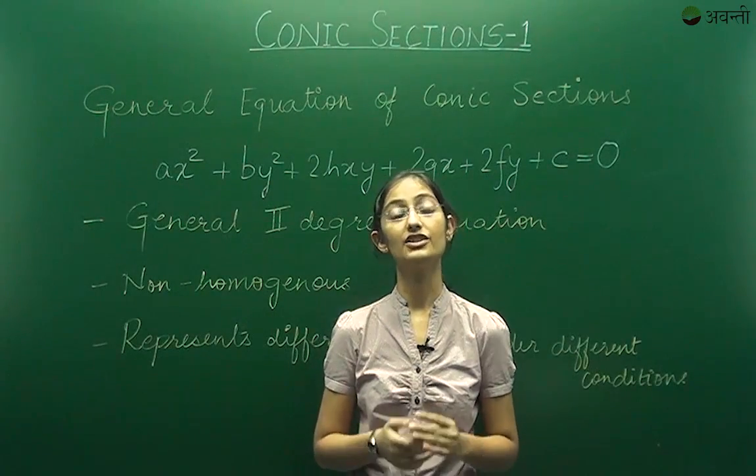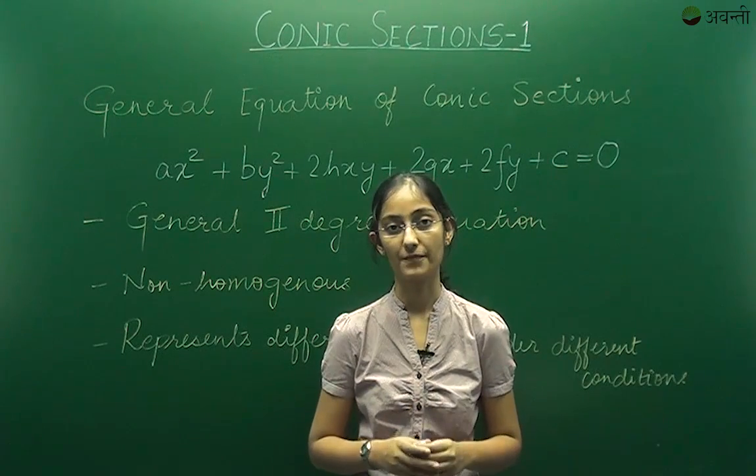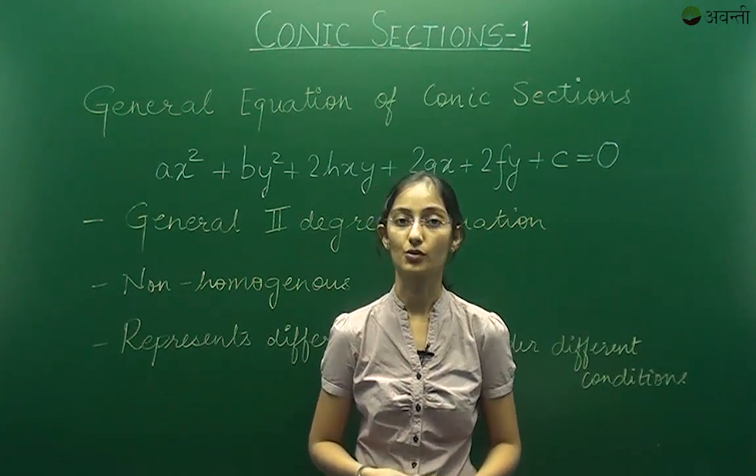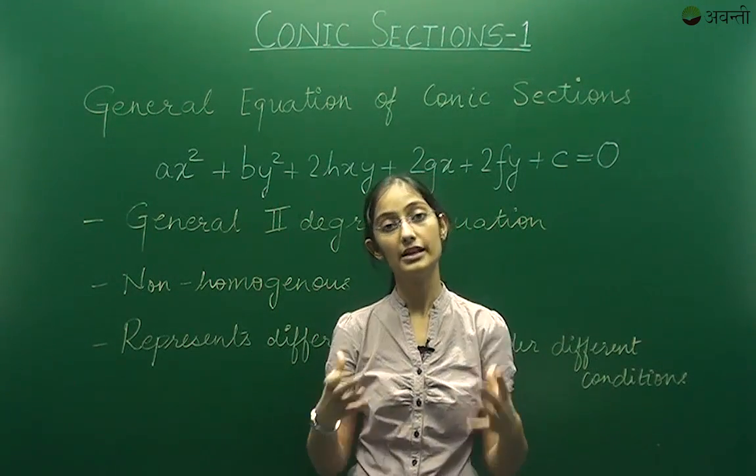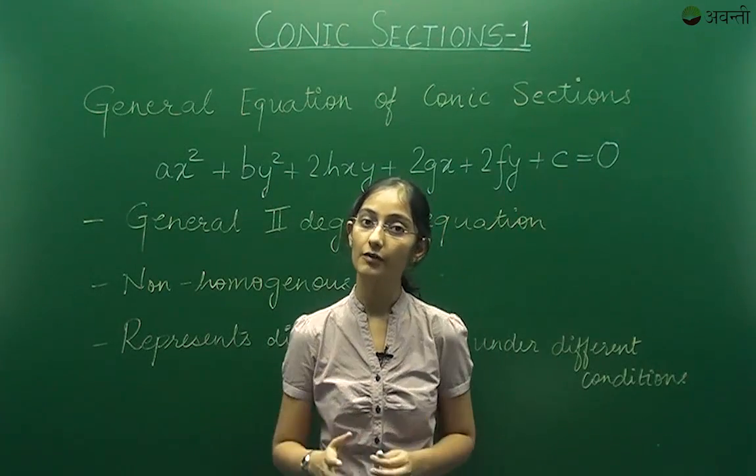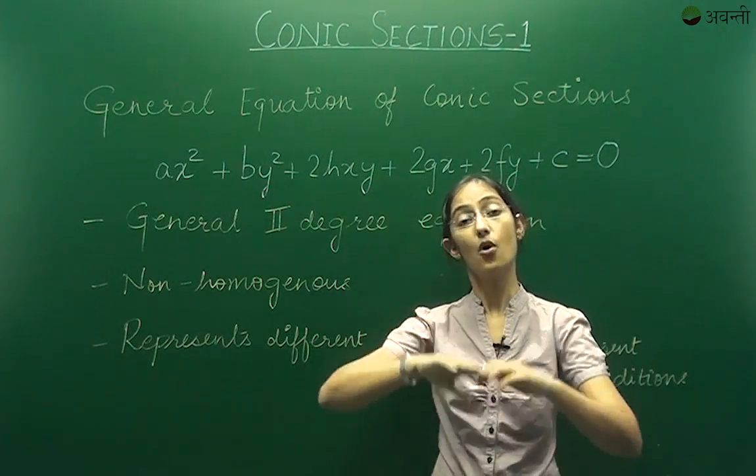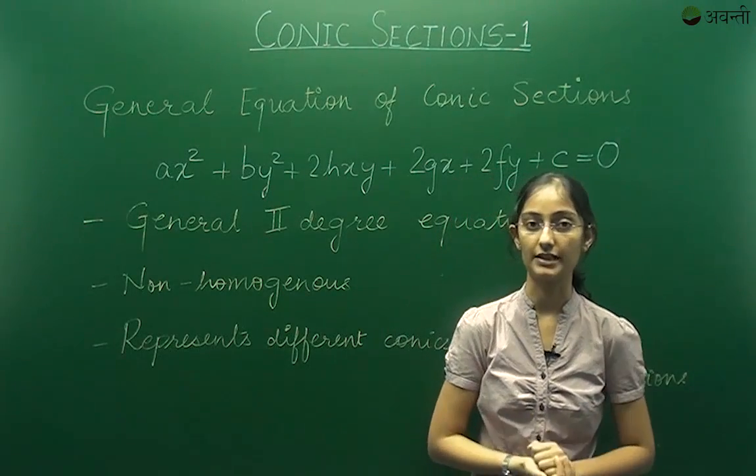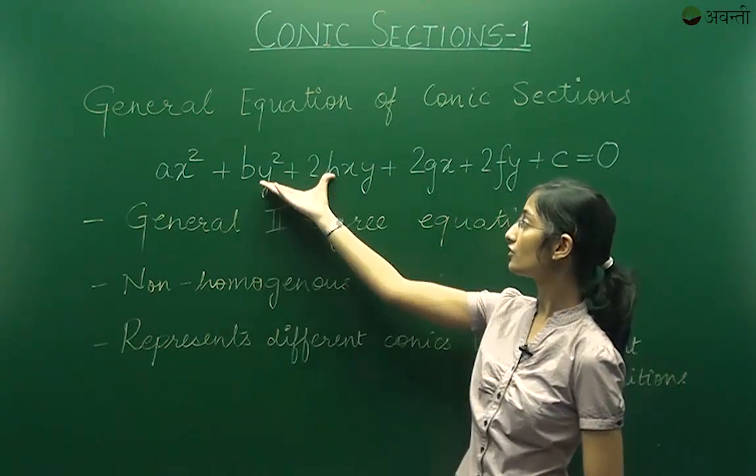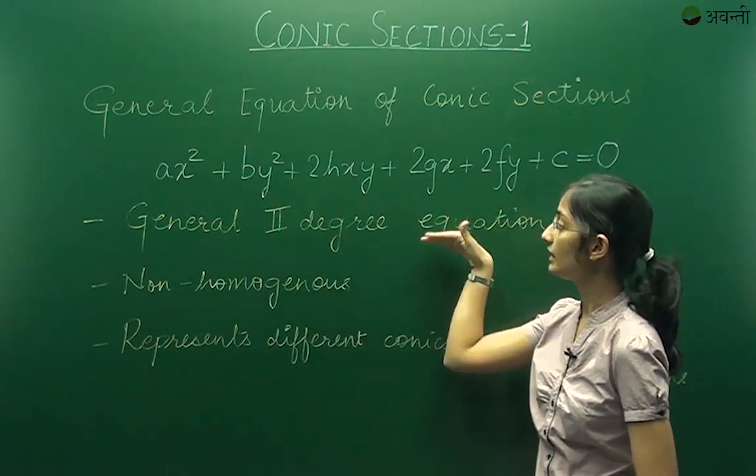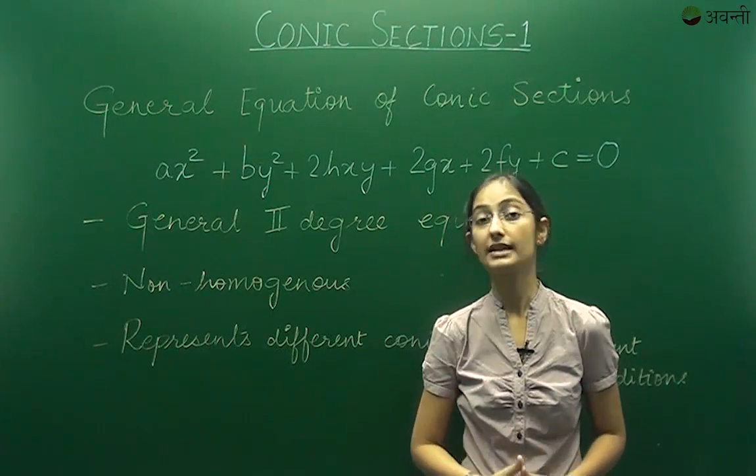Till now, we have seen the shapes of the different conics that we have. But as we are studying coordinate geometry, we need to also know their equations. Now here, I have written a particular equation which collectively represents all the different conic sections that we have seen. This equation is actually called a general second degree equation.